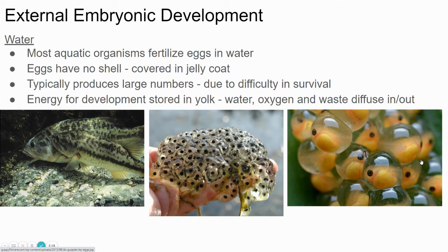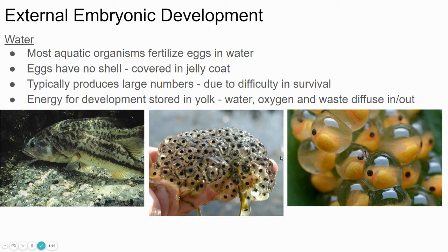In some organisms, the embryo develops outside of the body — that's called external development. Most organisms that live in water fertilize the eggs in the water, and then the eggs grow into embryos and eventually hatch. Things like fish and amphibians just lay their eggs in the water. The male releases sperm in the water to fertilize the egg, and then the eggs develop and hatch. Often they have to produce a lot of offspring because most of them aren't going to survive.